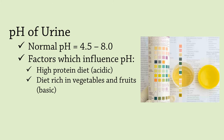The pH of normal urine is generally in the range of 4.5 to 8.0, with a typical average being around 6.0. Much of the variation occurs due to diet. For example, a high-protein diet results in more acidic urine, but a diet rich in vegetables and fruits generally results in more alkaline urine.